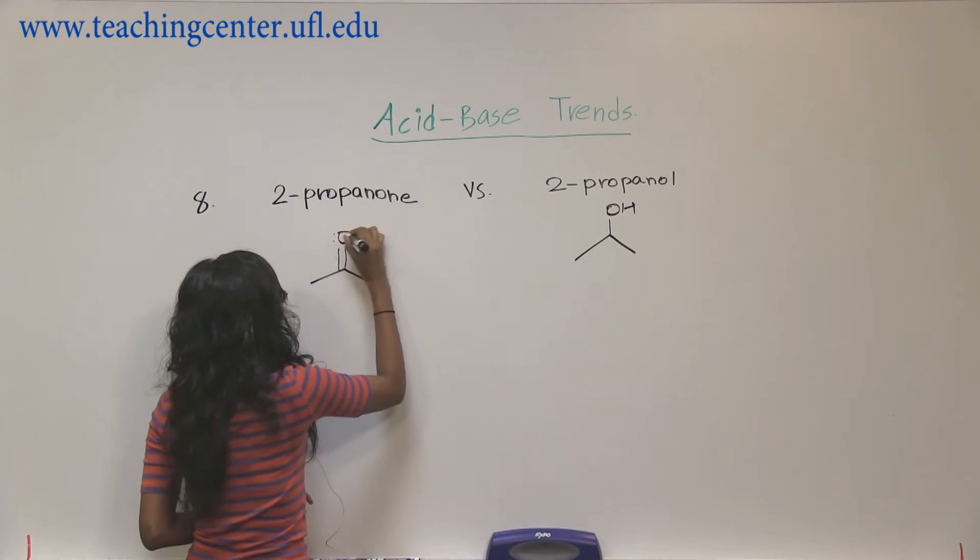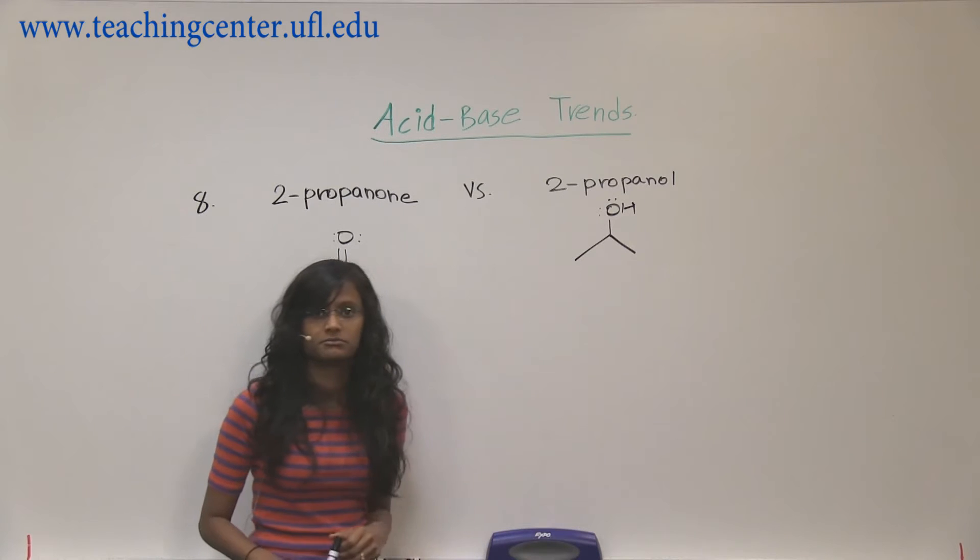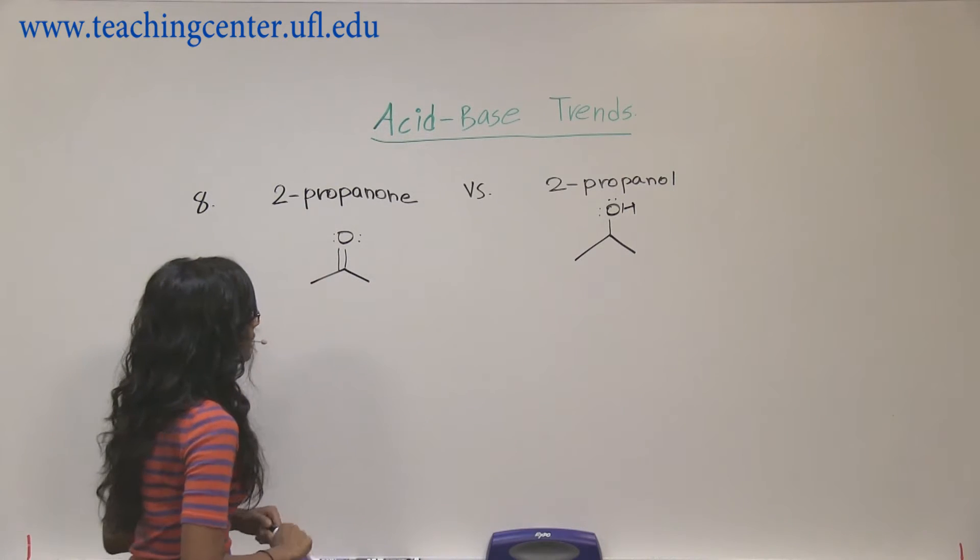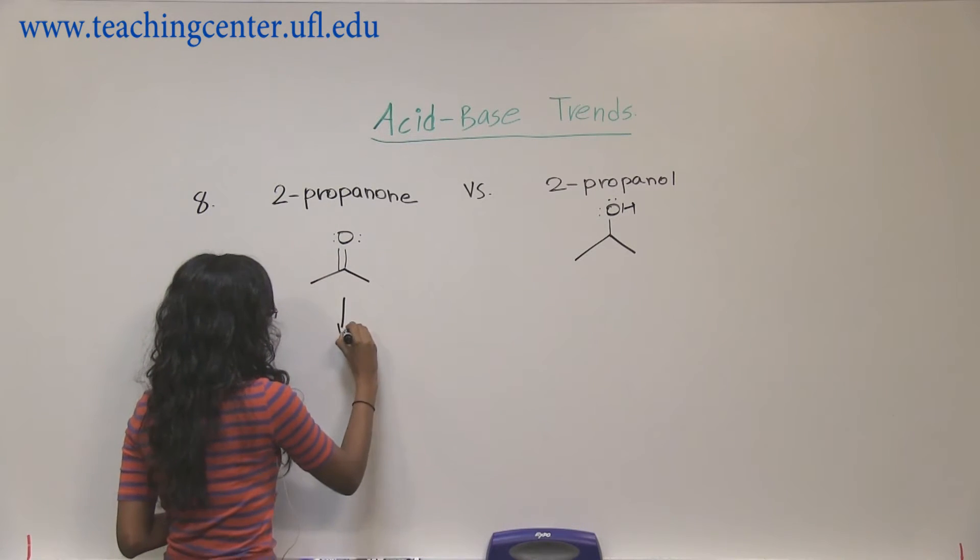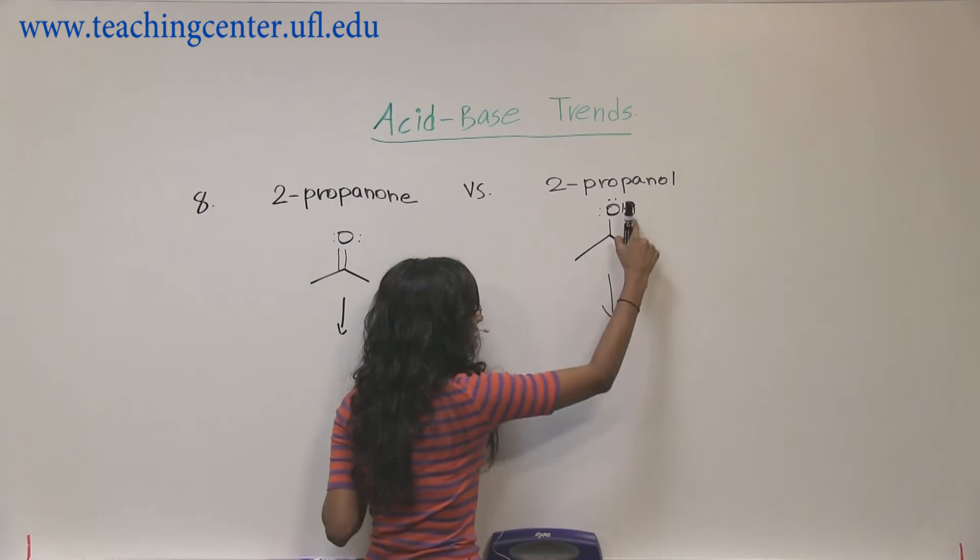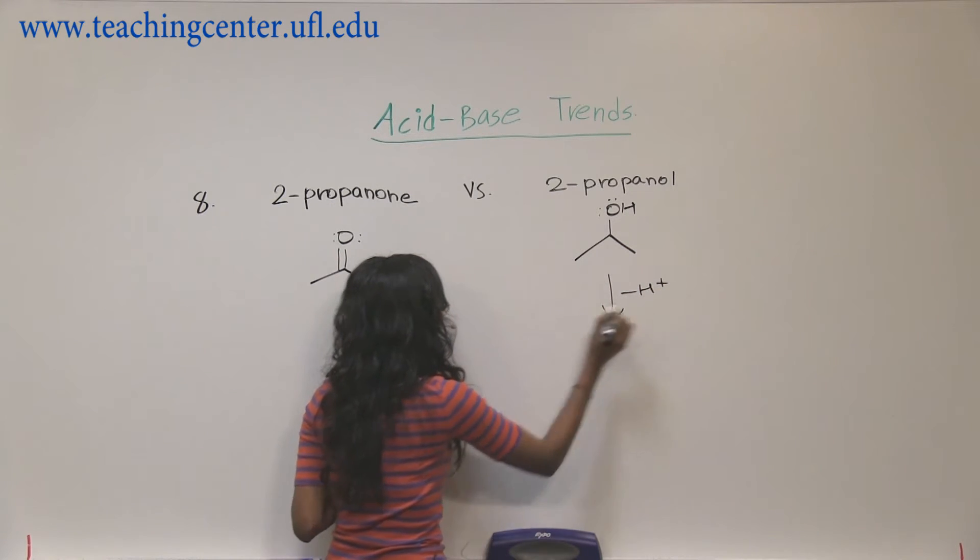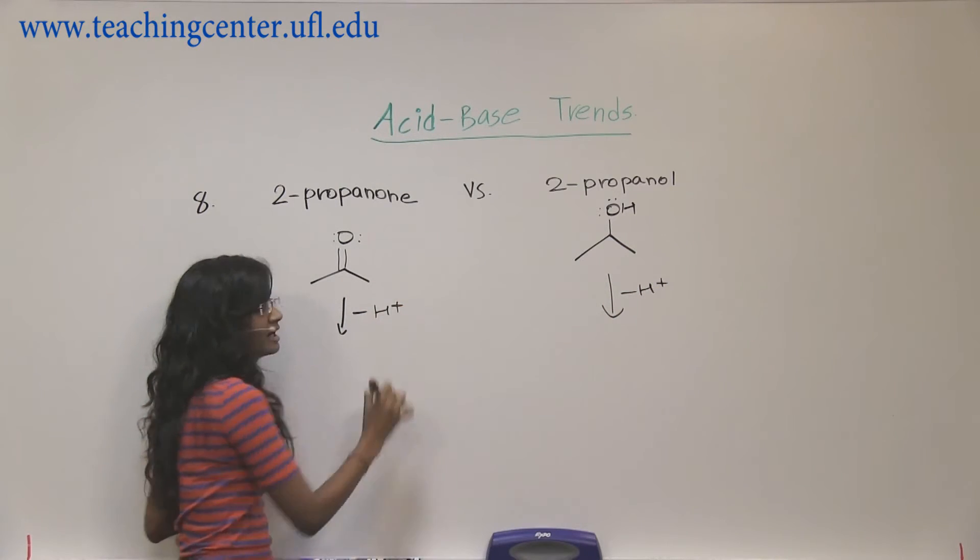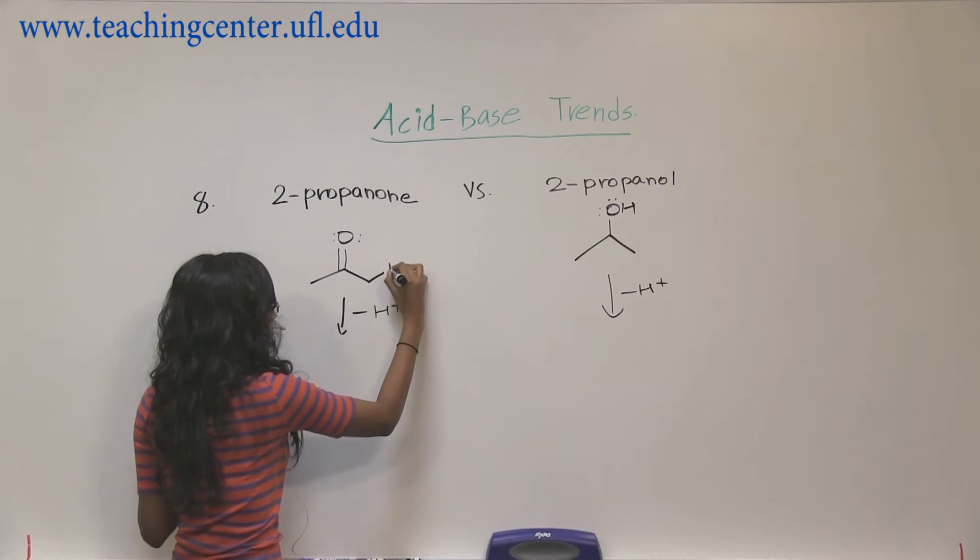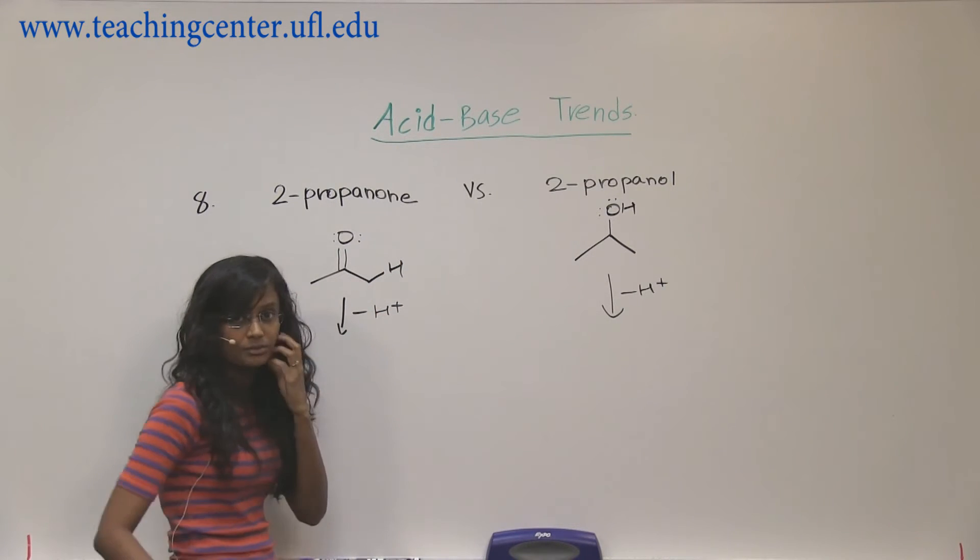Okay, so let's draw all the lone pairs because they're very essential. We already know that this is going to act as an acid, so we're going to have to find the most acidic hydrogen on this, which is going to be either one of the carbons.